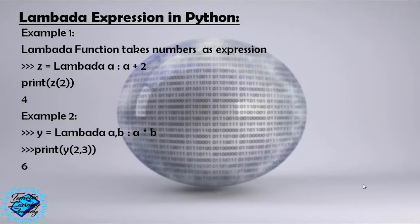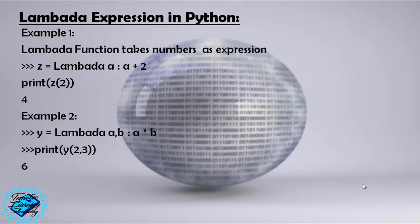Hello and welcome to this lecture on Lambda expressions in Python. Example number one: a Lambda function that takes a number as an expression. Z equals Lambda a: a plus two. print(Z(2)) — we will get four.